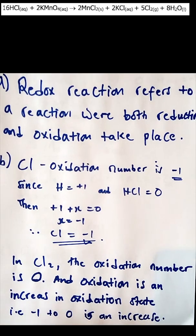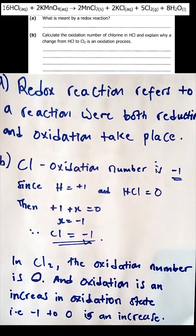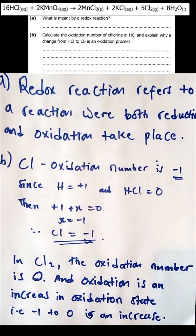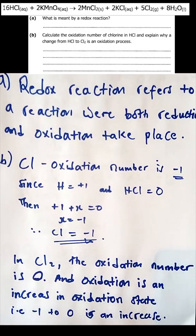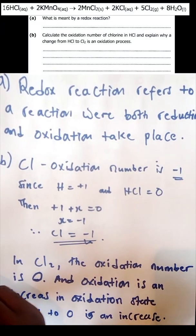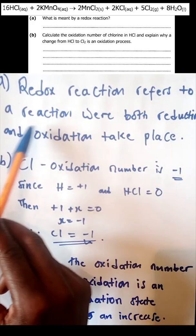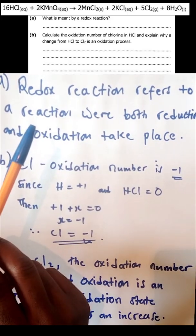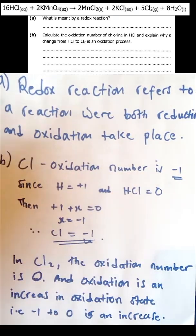Question seven is about redox reactions. You are given: hydrochloric acid plus potassium manganate gives manganese chloride plus potassium chloride plus chlorine plus water. What is meant by a redox reaction? A redox reaction is a combination of two words: reduction and oxidation. A redox reaction is one where both reduction and oxidation take place simultaneously — not only oxidation or only reduction, but both.